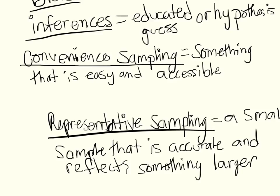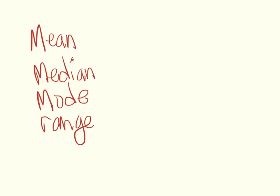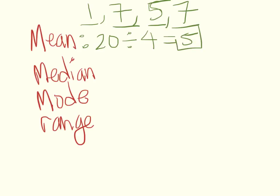One thing we reviewed with probability was mean, median, mode, and range. Let's say you have a sequence of numbers like 1, 7, 5, and 7. The mean is all these numbers added up divided by the amount of numbers that there are. If you add those up, you get 20, and how many numbers are there? 4 divided by 4. So 20 divided by 4 is 5, so our mean is 5.